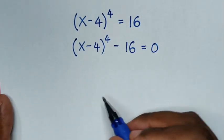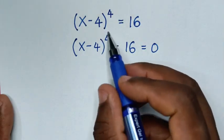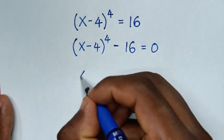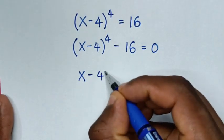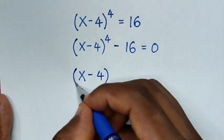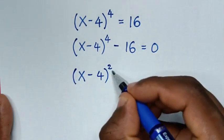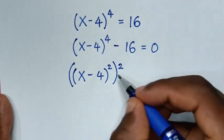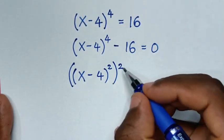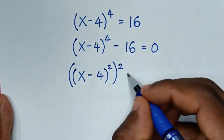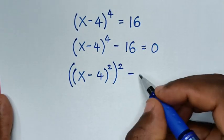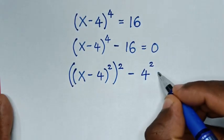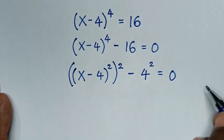In the next step, this power 4 we'll make into square. So it will be (x minus 4) bracket squared, then bracket again squared — because square times square is power 4. Then minus 16, written as 4 squared, is equal to 0.